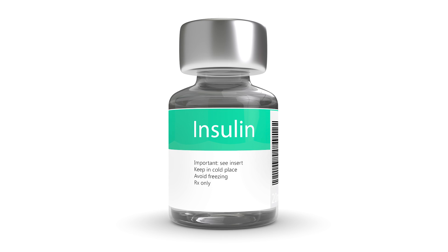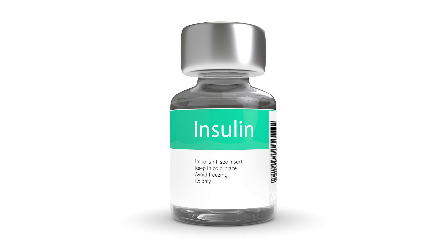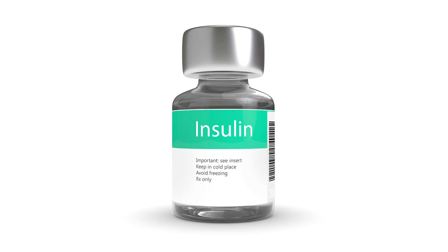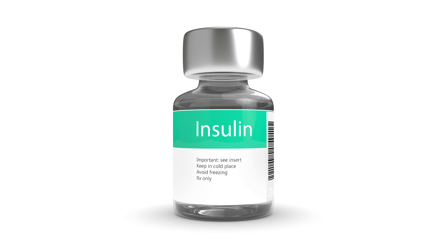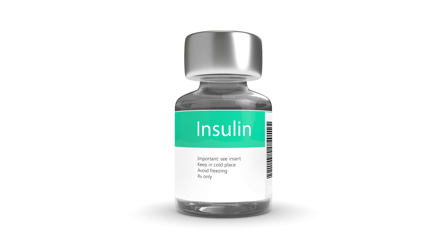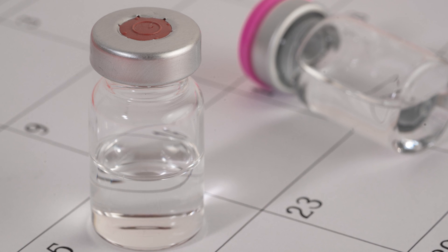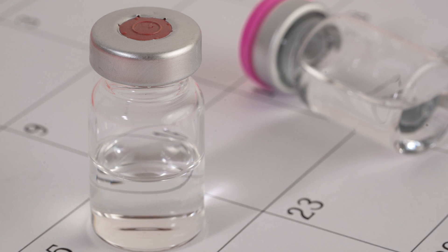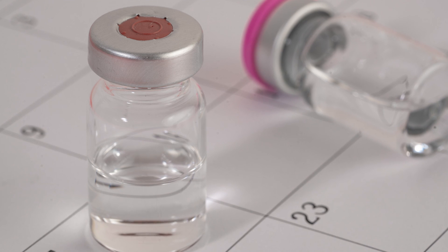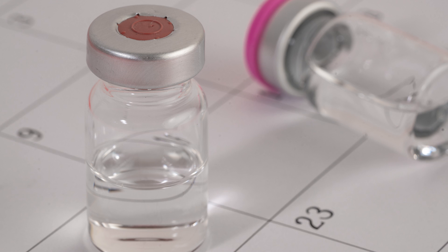Unopened, unused insulin vials and pens should be kept refrigerated at 36 to 46 degrees Fahrenheit or 2 to 8 degrees Celsius and protected from light. Refrigerated, unopened insulin vials and pens may be used until the expiration date. If unopened, unused insulin vials and pens are kept at room temperature, they must be thrown away after one month. This is the case for most brands; however, refer to your insulin package insert for details.